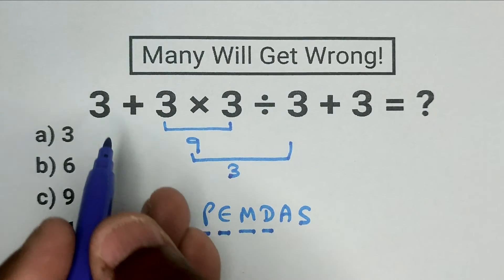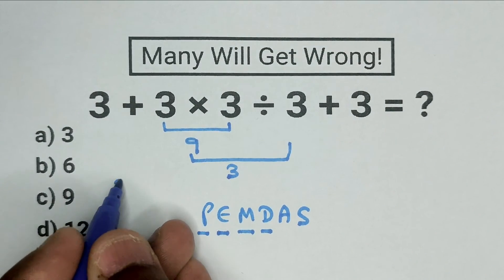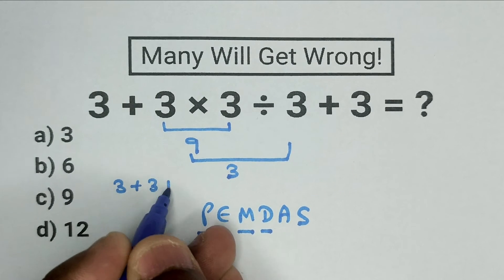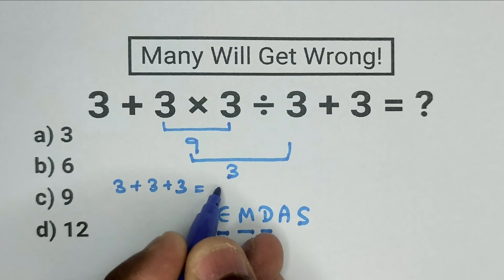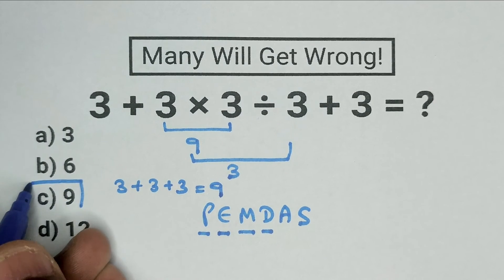So, now we have 3 plus 3 plus 3. And this equals 9. So, the correct answer is option C, 9.